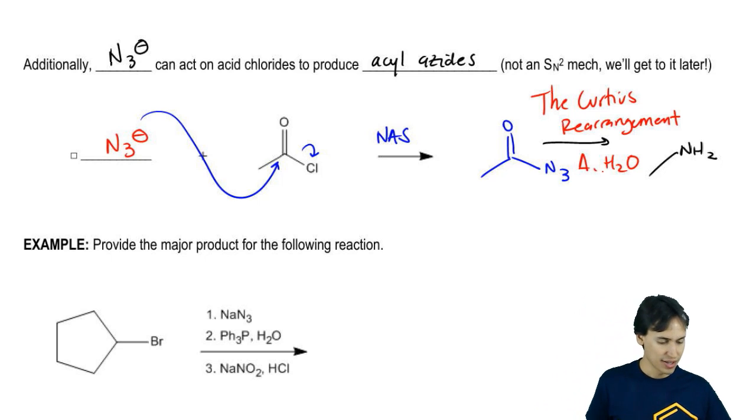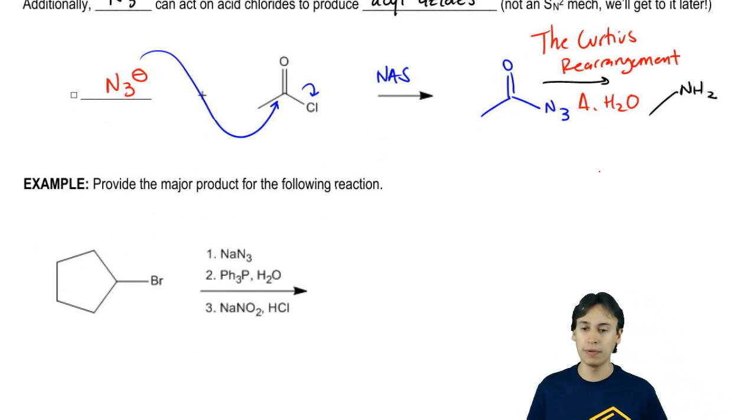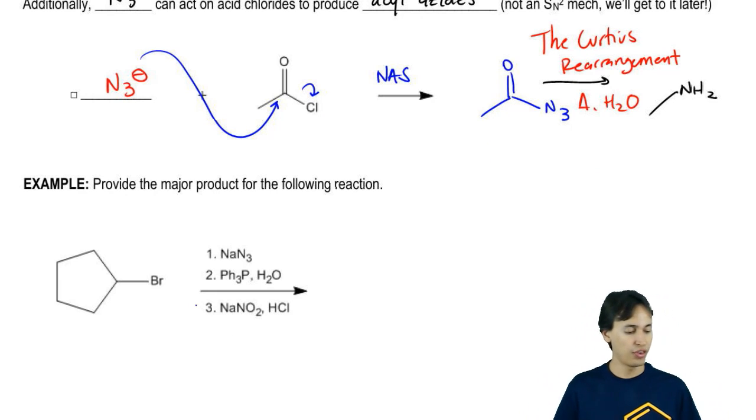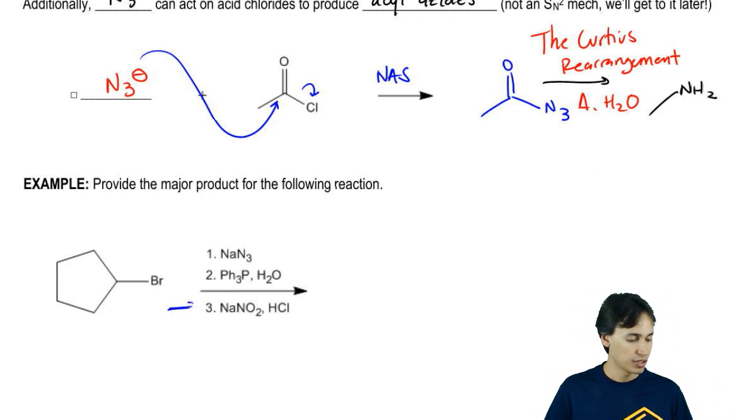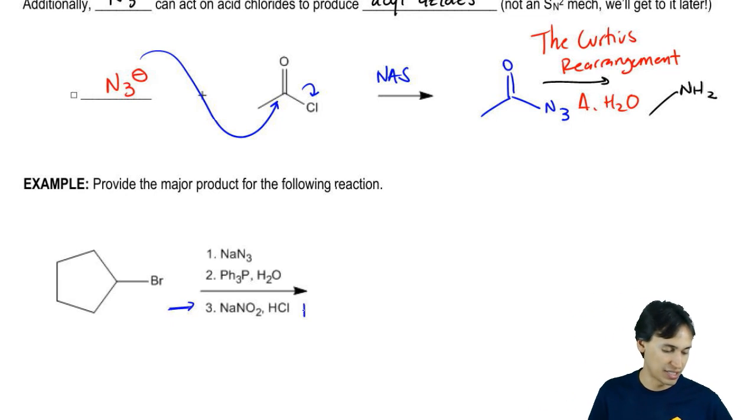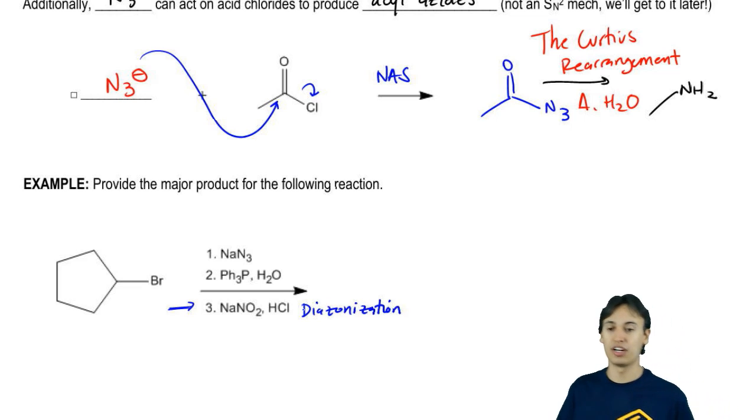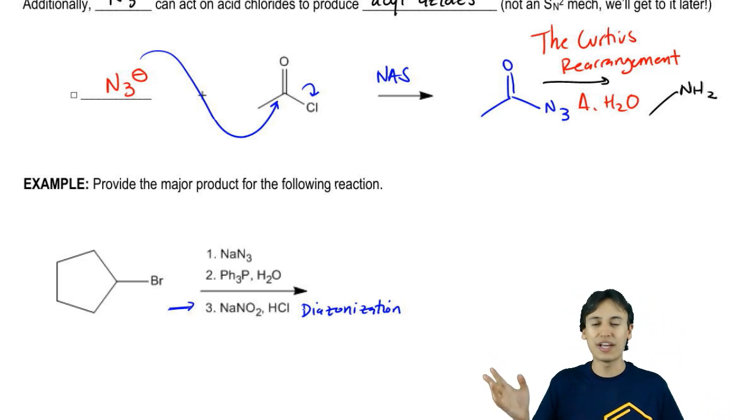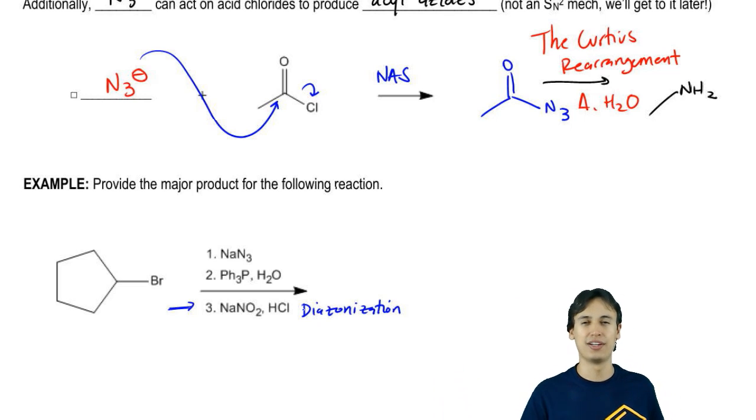What I want to do next is just go ahead and do this practice problem and see how far you can get. I will warn you guys that the third reagent – I'm just going to tell you right now – this is a reaction called a diazonization. You might not know it yet depending on if you've watched this video or not. If you don't know the last one, no hurt feelings. Just go ahead and watch me solve it but at least you should be able to do the first two. Then I'll go ahead and finish up the last part for you guys. Go ahead and do it.